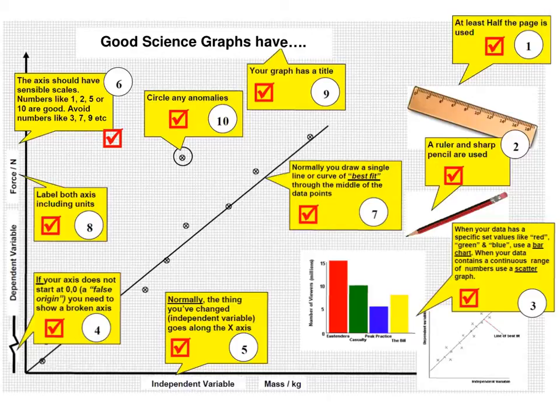Number one is at least half the page is used. For assessed practicals like ISAs, I know AQA, the exam board which often a lot of schools do, says that the points you plot should occupy at least two thirds of the scale you're using. So make the whole graph at least half of a page.